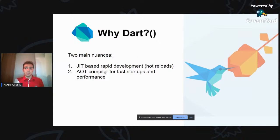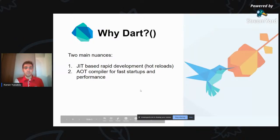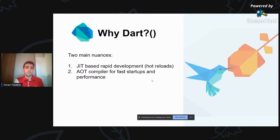İkinci məsələ isə AOT - Ahead-of-Time compiler-lardır. Android 5-dən sonra artıq AOT compiler-lar istifadə edir. Dart-ı da buna uyğunlaşdırıblar. Biz proqramı yazdıq və production-a buraxmaq istəsək, AOT compiler vasitəsilə compile olunur. Bu da kodumuzun daha sürətli, daha performanslı işləməsinə imkan verir. AOT compiler-lar lazım olan bütün vasitəni əvvəlcədən yaddaşda saxlayır. Bu səbəbdən application-ların yaddaşı böyüyür - AOT compiler-lar APK yaradanda lazım olan şeyləri əvvəlcədən saxlayırlar.